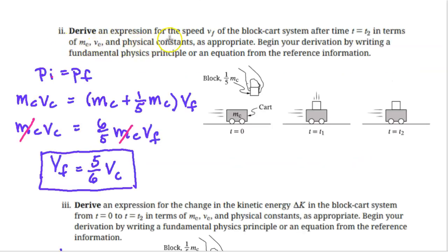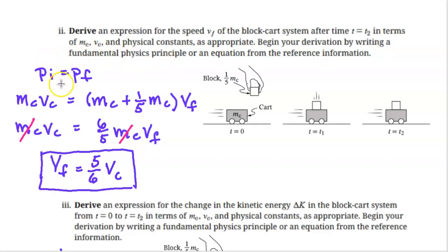Part 2i: Derive an expression for the speed VF of the block-cart system after time t=t2, in terms of MC, VC, and physical constants as appropriate. Begin your derivation by writing a fundamental physics principle or an equation from the reference information. Because there's no external net force horizontally, we know that momentum is conserved — that is our physics principle. We write pi = pf, meaning total initial momentum equals total final momentum. The initial momentum is just the momentum of the cart since the block is not moving horizontally. The cart's mass is MC and its velocity is VC, so its momentum is MC·VC.